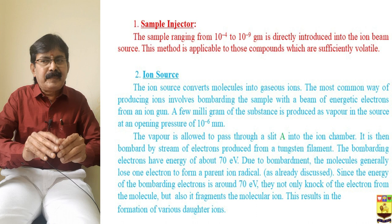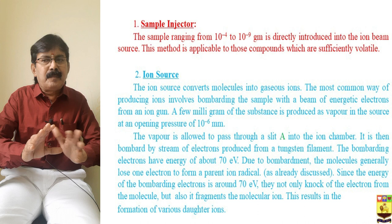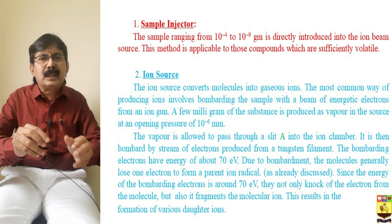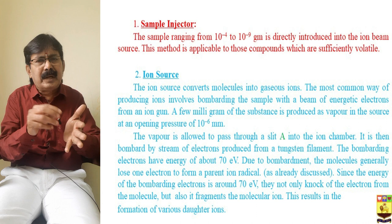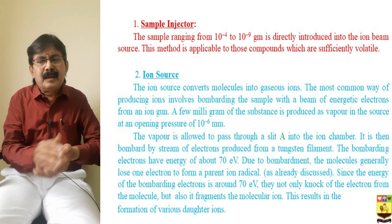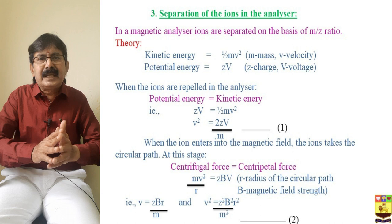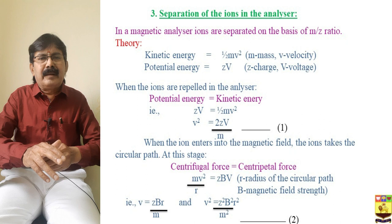The vapor is allowed to pass through slit A into the ion chamber, where it is bombarded by a stream of electrons produced from the tungsten filament. Since the energy of the bombarding electrons is around 70 electron volts, they not only knock off the electrons but are energetic enough to fragment the molecule — forming daughter ions from the molecule ions. Let us see how separation takes place in the analyzer.